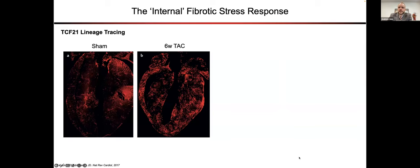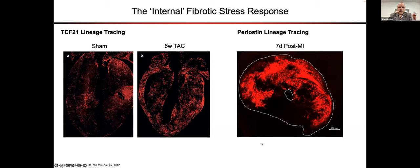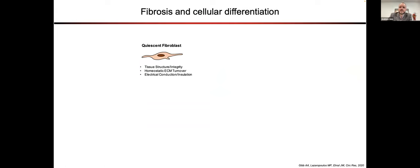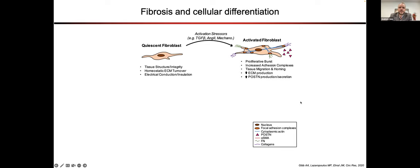Fibrotic initiation and expansion was found to occur from resident cardiac fibroblasts of the TCF21 lineage through elegant lineage tracing experiments. While fibroblasts are always present in the heart, their activation and expansion in pressure overload can affect myocardial structure and function. TCF21 tissue-resident cardiac fibroblasts begin to express periostin — a secreted extracellular matrix protein — upon stress-induced activation. This periostin-positive cell population is necessary for the adaptive healing and fibrosis in the heart.